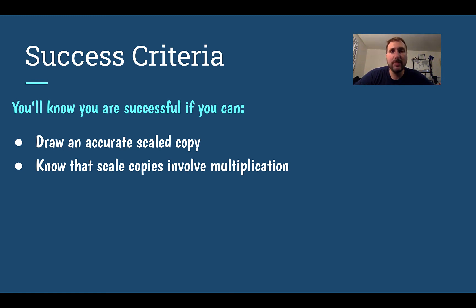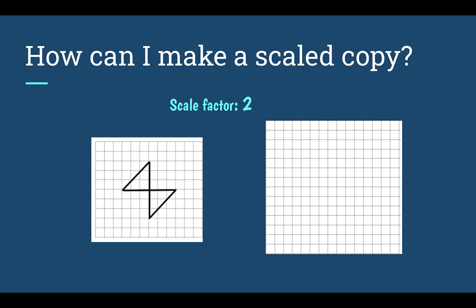You'll know you're successful after this lesson if you can draw an accurate scaled copy and you know that scale copies involve multiplication. So how can we make a scale copy? If you remember from the previous lesson, the scale factor is what you multiply every distance and side by from the original to our scale copy.